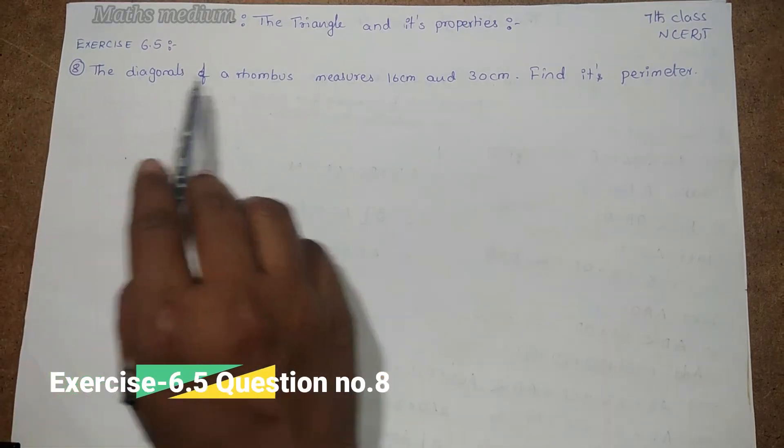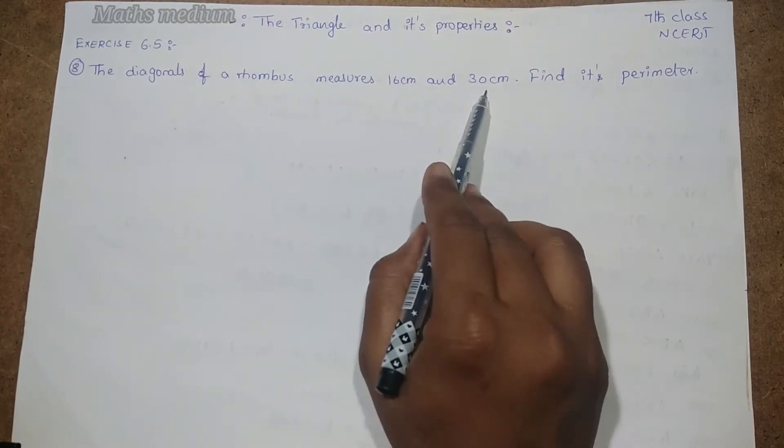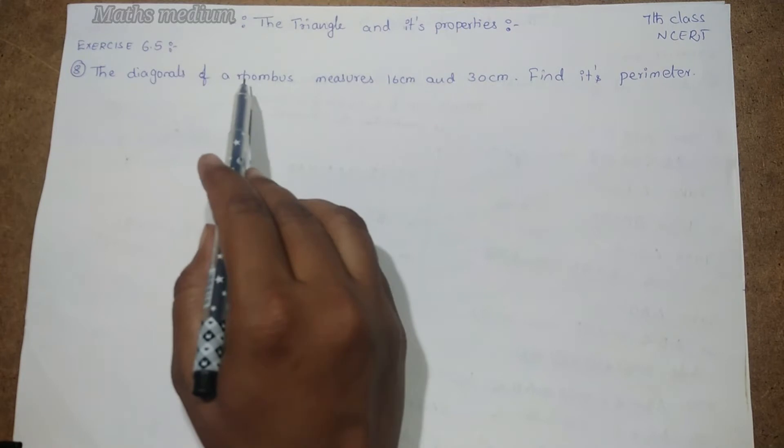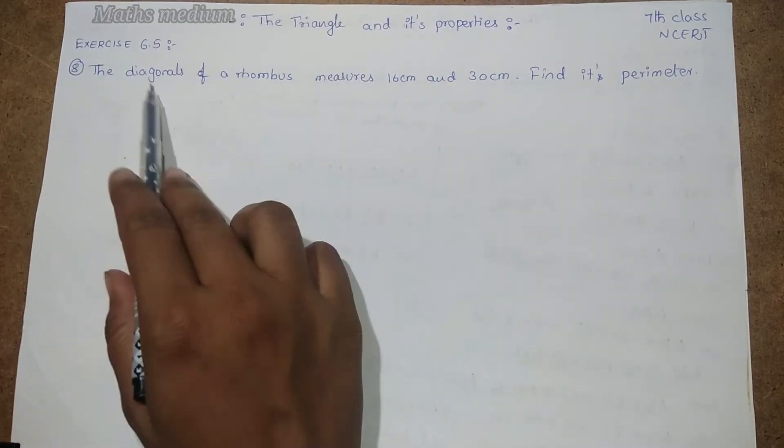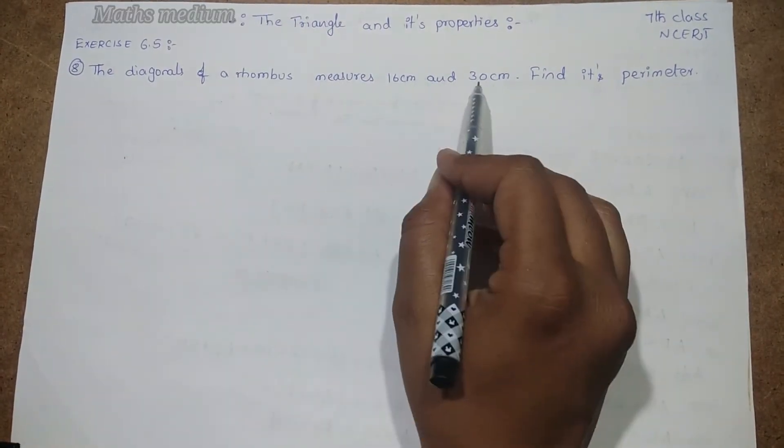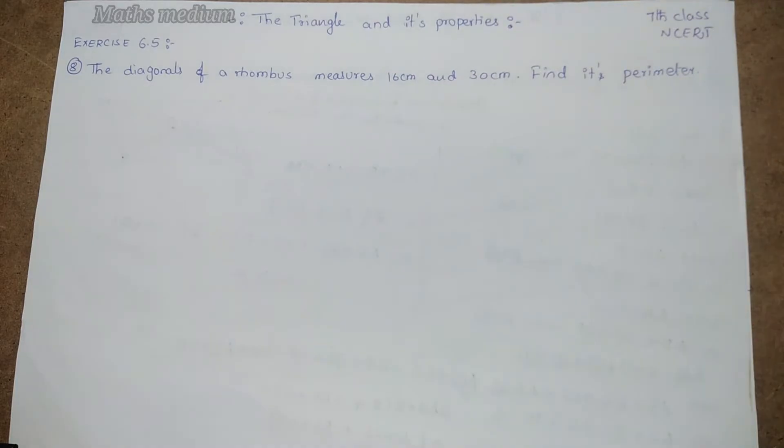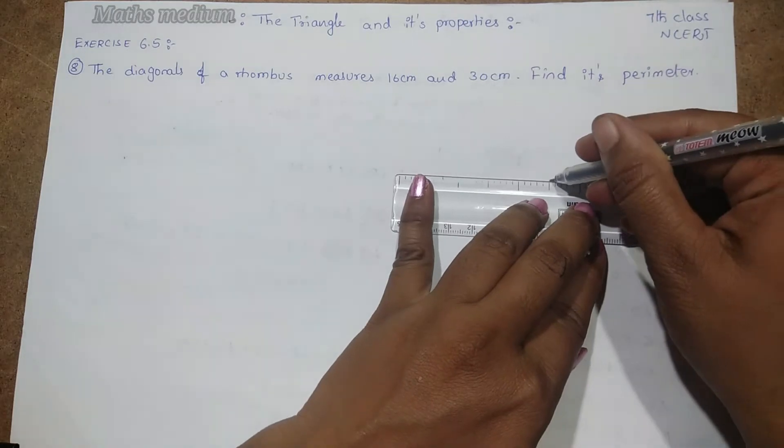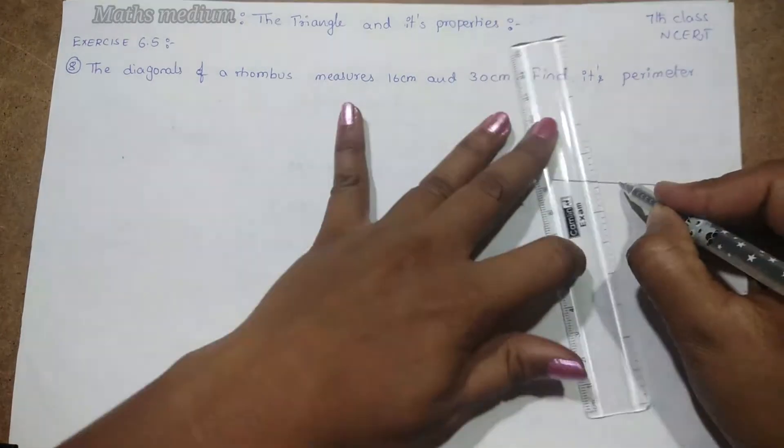The diagonals of a rhombus measure 16 cm and 30 cm. Find its perimeter. We know that a rhombus has two diagonals. They are perpendicular bisectors at a point.